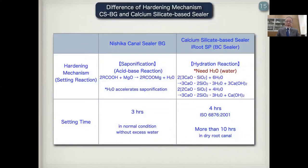Here I show the difference in hardening mechanisms of CSBG, Nishika-Kina-Cela-BG, and calcium silicate-based sealer, such as iSP. The hardening mechanism of Nishika-Kina-Cela-BG is saponification — an acid-base reaction.